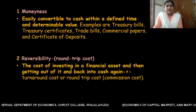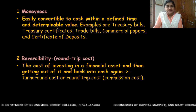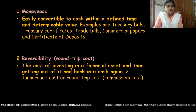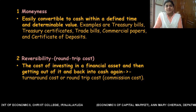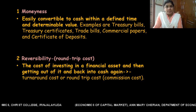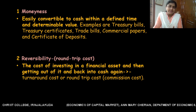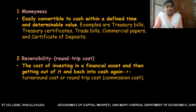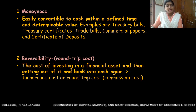Examples of financial assets exhibiting moneyness include treasury bills, treasury certificates, trade bills, commercial papers, and certificates of deposits. These are money market instruments that can be easily traded in the money market and can be easily converted into cash.